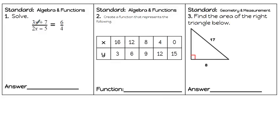Today's warm-up, number one. We have this proportion and we're going to set these equal to each other. We've got four times three X plus seven equal to six times two X minus five.